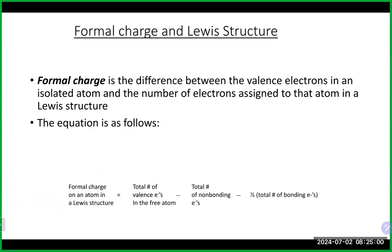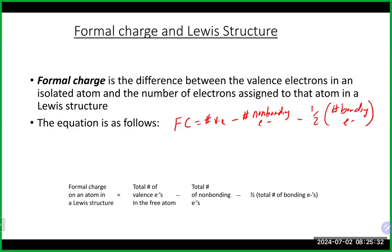Formal charge is the difference between the number of valence electrons in an isolated atom and the number of electrons assigned to it in its Lewis structure. To calculate formal charge: take the number of valence electrons in the free element, minus the number of non-bonding electrons (the dots in your picture), minus one-half the number of bonding electrons (the lines in your Lewis structure). Formal charge lets us understand the charge on each atom and helps us decide between two Lewis structures which is the better one.